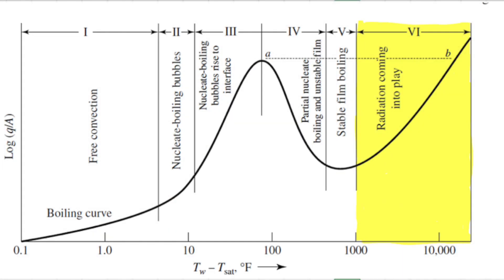Regimen 6 is characterized by delta T values of 1,000 degrees Fahrenheit and more. This is the region of the boiling curve where radiant energy comes into play and the heat flux curve rises once again. Because this region requires such high delta T values, we were not able to observe regimen 6 in our experiment.